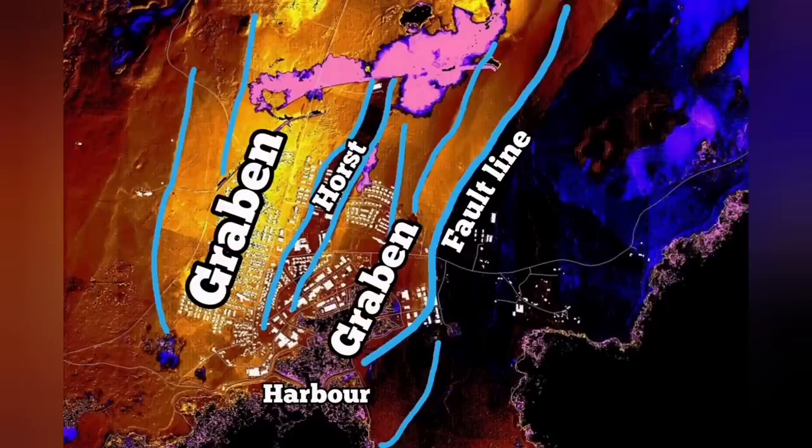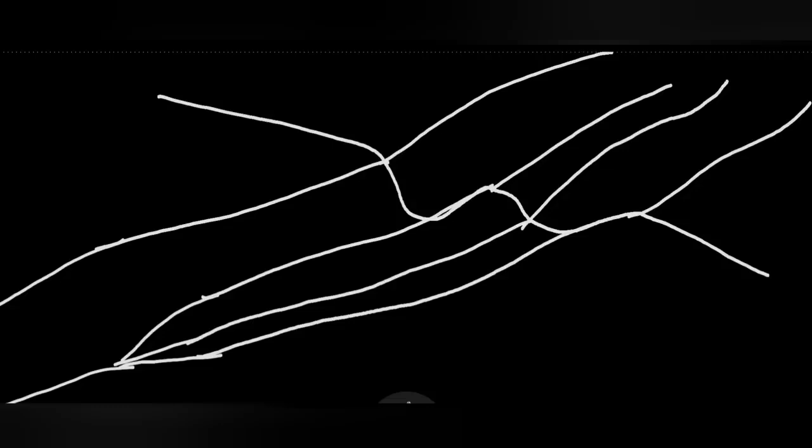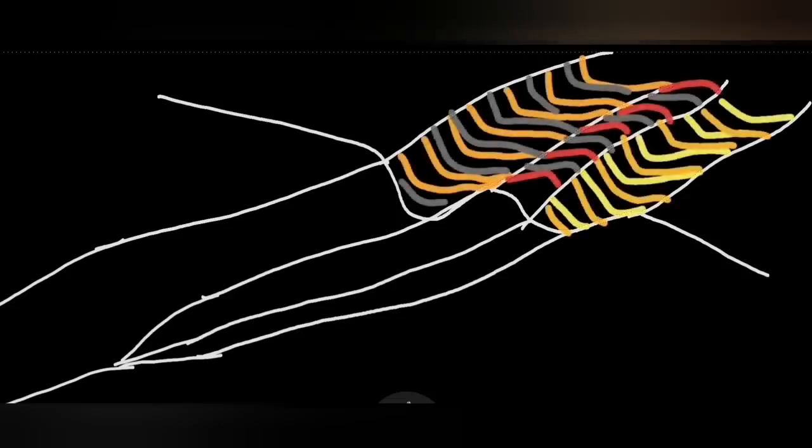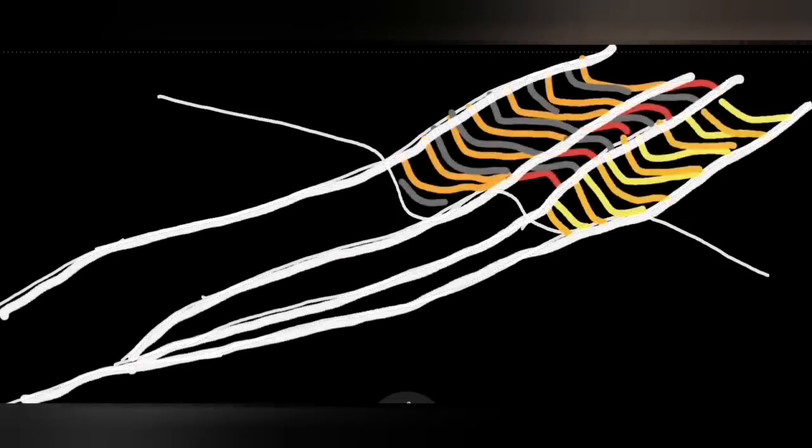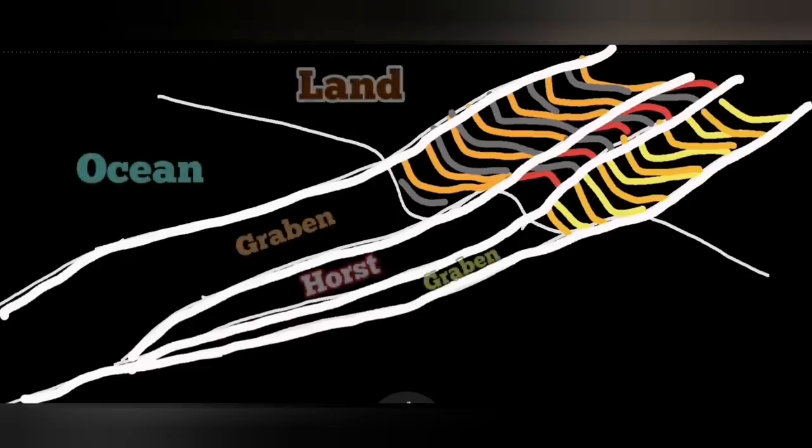This is now going to change it seems. Off the shore of Grindavik, in the harbor and toward the ocean, we have the continuation of this horst and graben. This is practically a rift, a rift valley.